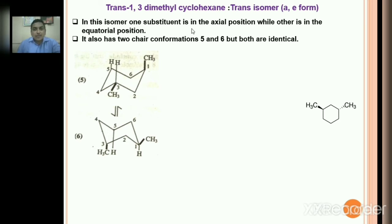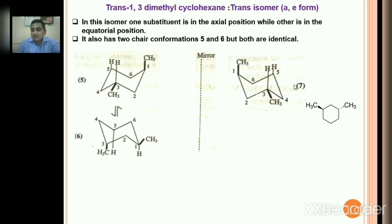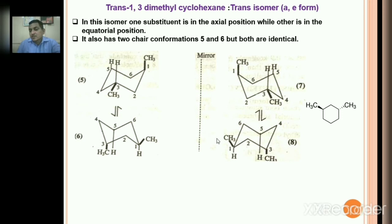Remember, trans-1,3-dimethylcyclohexane has two chair conformations — conformations 5 and 6 — and both are identical, with one substituent axial and another equatorial. Mirror images: conformer 5 and conformer 7 are non-superimposable mirror images; conformer 6 and conformer 8 are also non-superimposable mirror images. These are the various conformations of trans-1,3-dimethylcyclohexane.